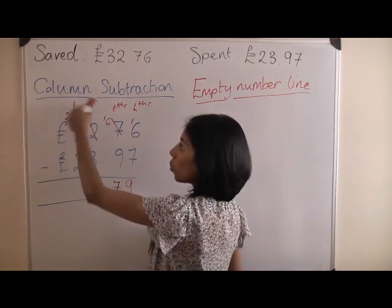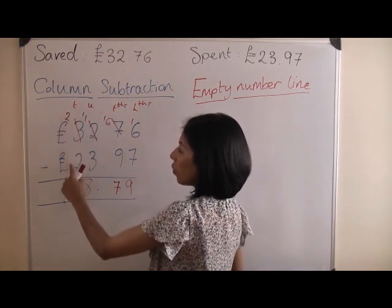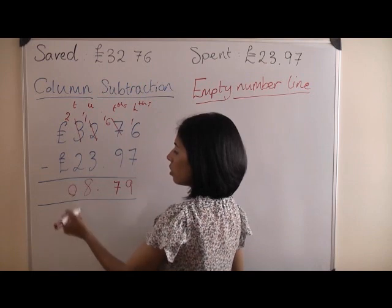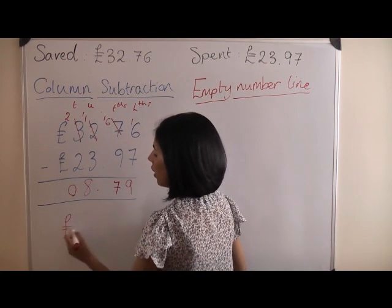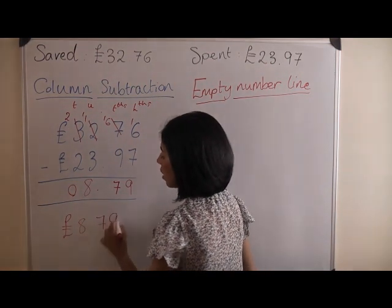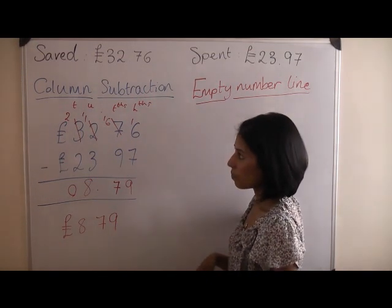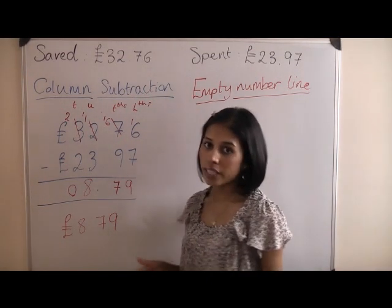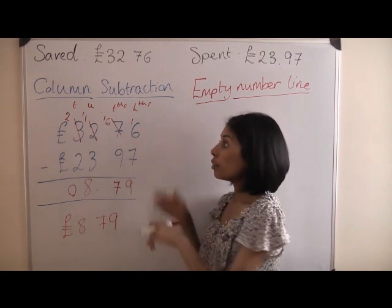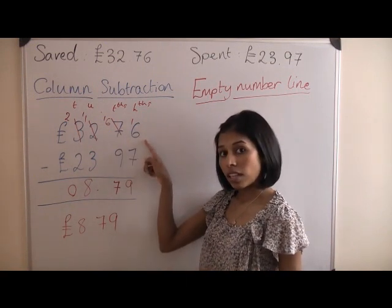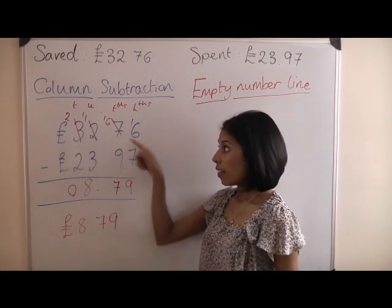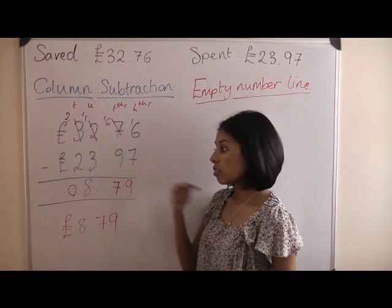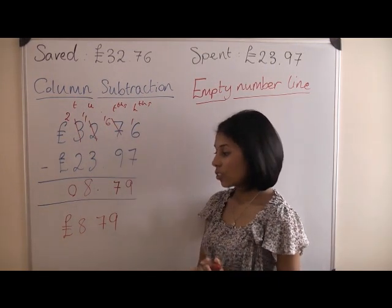And two, twenty. And take away another twenty is zero. So you have left eight pounds seventy nine. So in column subtraction, it's really important that you borrow from the column next to the column that you're working on. And then that number falls by one. And you carry on until you get your answer.